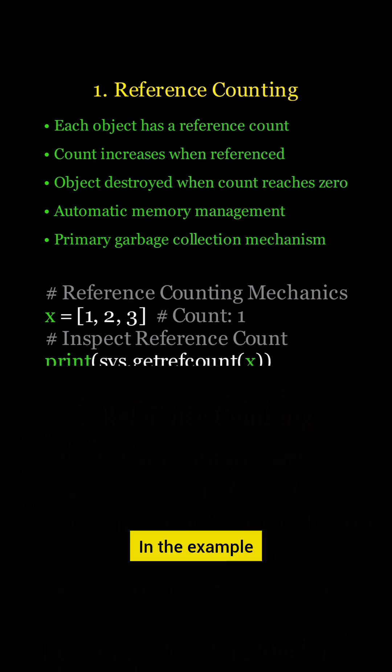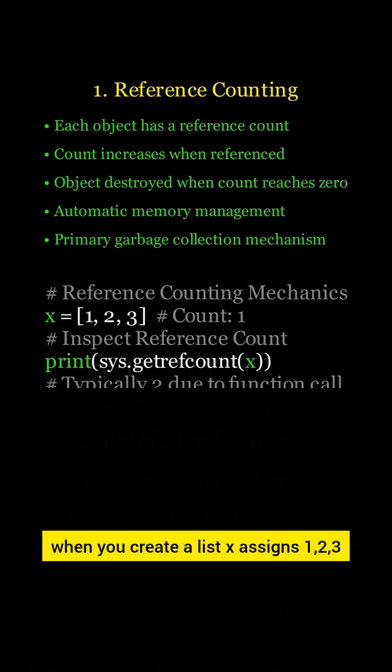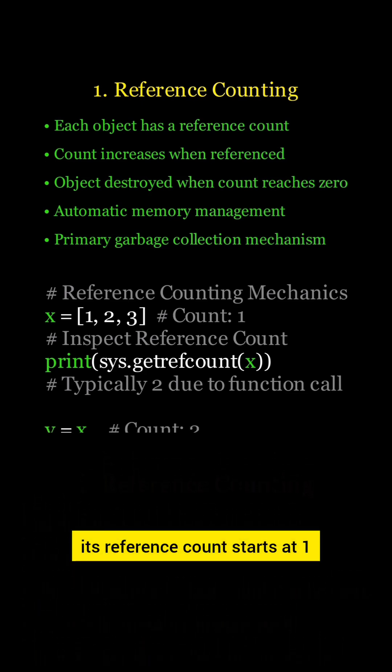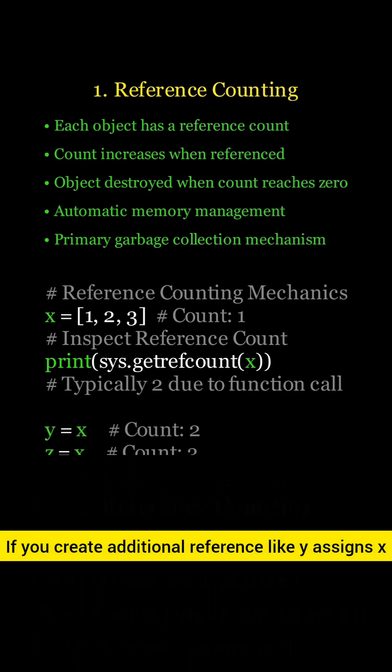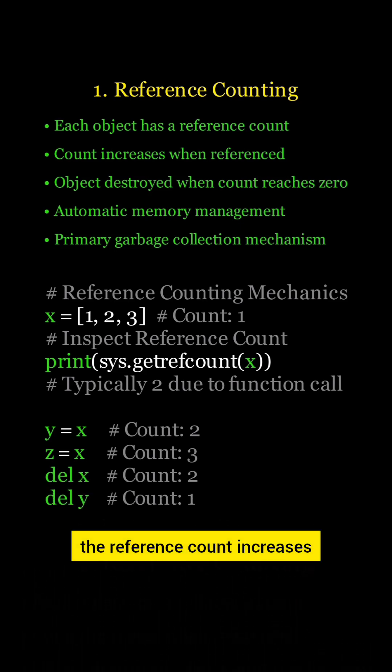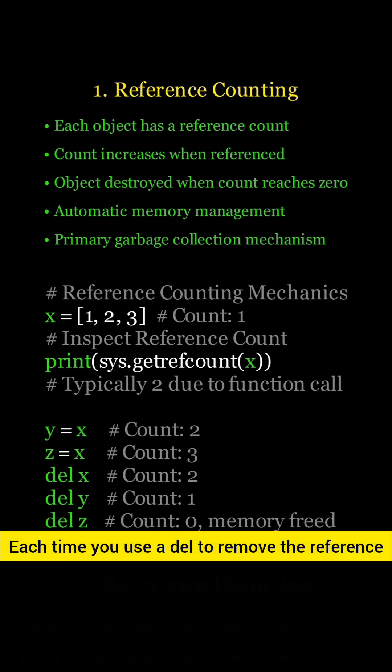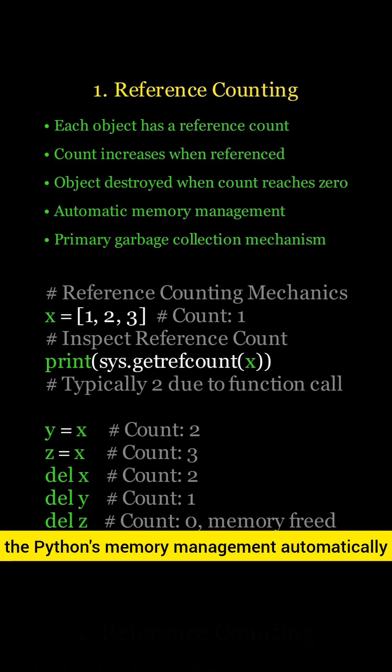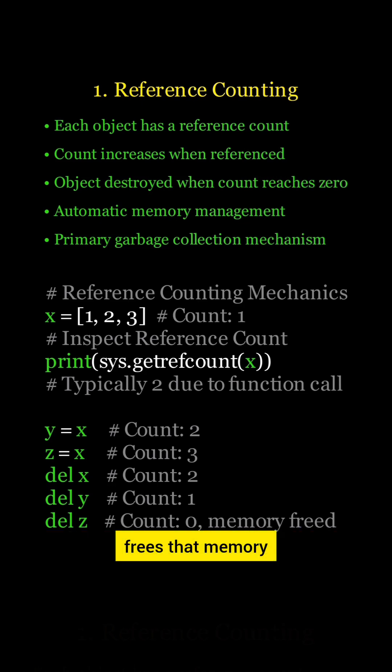In the example, when you create a list x assigns, its reference count starts at 1. If you create additional references like y assigns and z assigns, the reference count increases. Each time you use del to remove a reference, the count decreases. And when the count reaches zero, Python's memory management automatically frees that memory.